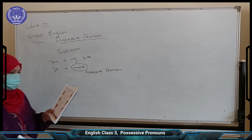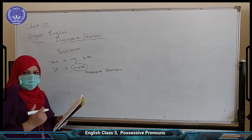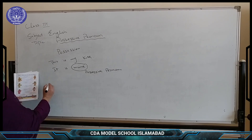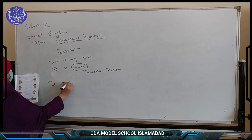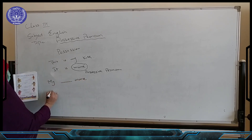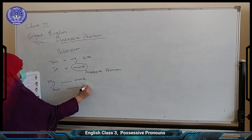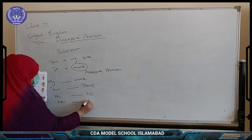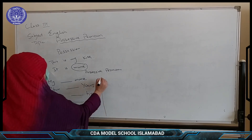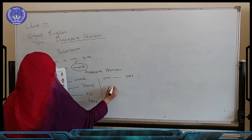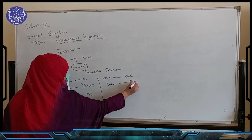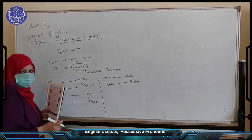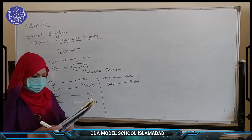In unit number 1, there are different examples. I will tell you about different possessive pronouns. There is a table: my changes to mine — mine is a possessive pronoun. Your will change into yours. His will remain his. Her will change into hers. Our will change into ours. Their will change into theirs. These forms — mine, yours, his, hers, ours, theirs — are called possessive pronouns. Yeh jo aapki malkiyat ko show karti hain, woh sab kya kehlaati hain? Possessive pronoun.